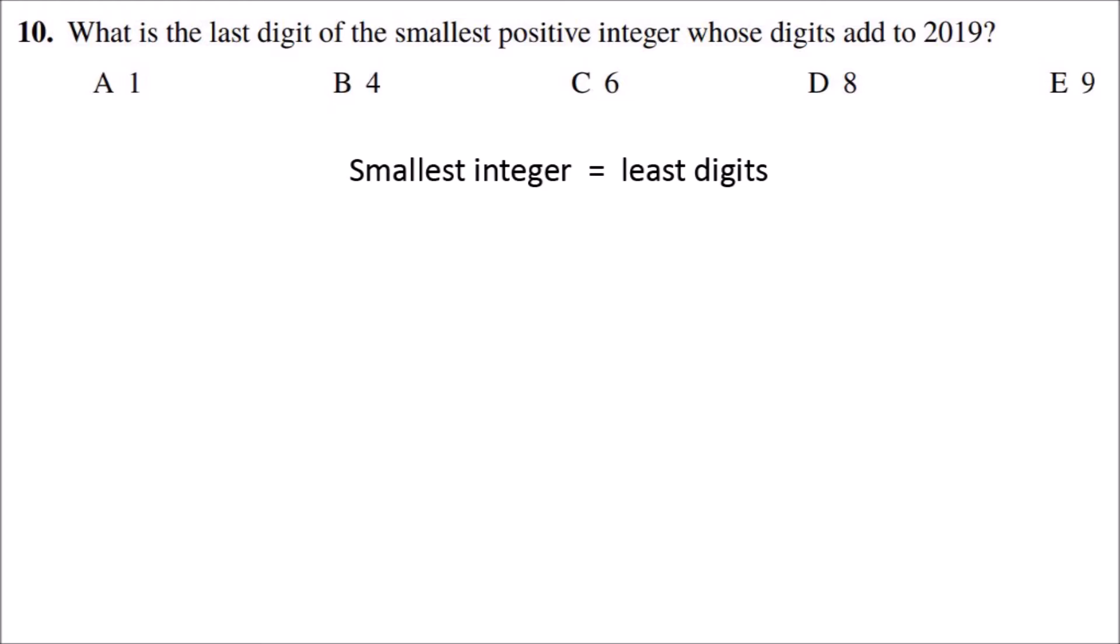To have the least amount of digits possible and have the digits add to 2019, we need the digits to be as big as possible, which would be 9.